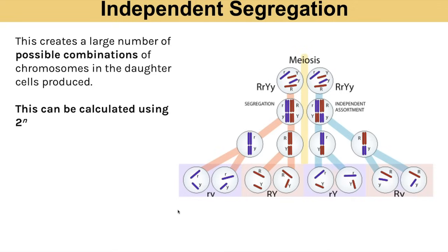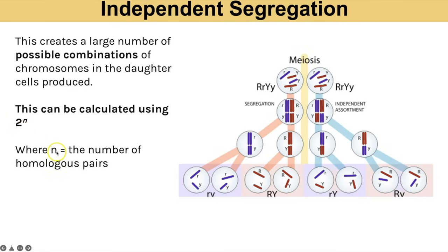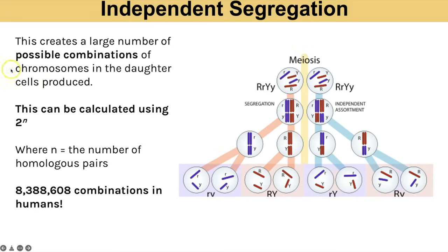You can calculate the number of possible combinations using 2 to the power of n, where n is the number of homologous pairs that species has. For humans that would be 2 to the power of 23 — we have 23 pairs of chromosomes — which means we can make over eight million different possible gametes just from independent segregation.